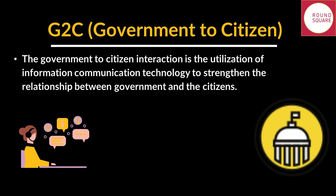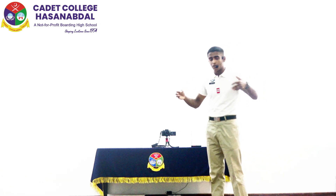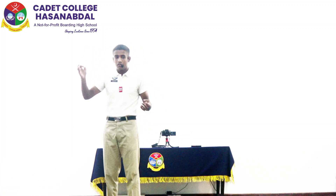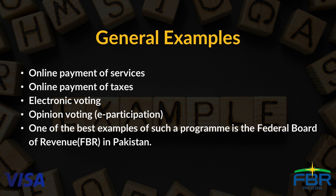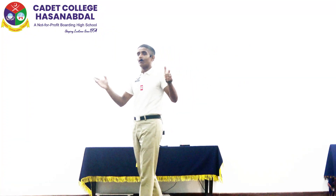Moving on to the second type of interaction, we have G2C, or government-to-citizen interaction. As the name suggests, this is the interaction between the government and its citizens. The biggest example of this interaction lies right in our own home country — Pakistan. The Federal Board of Revenue, or FBR, offers Pakistani citizens the ability to pay taxes online.